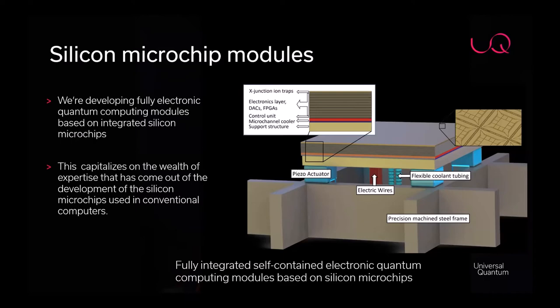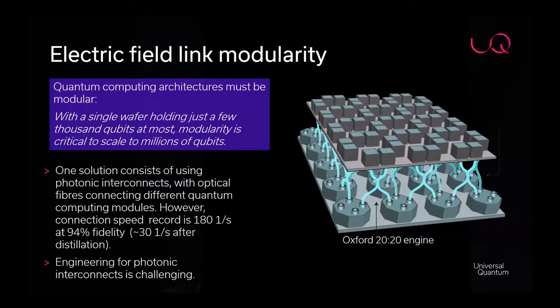The next pillar is modularity. Quantum computing architectures must be modular because however many qubits fit on one wafer, you'll eventually want more. In trapped ions there are two modular architectures. One is the photonic interconnect architecture — used in the Oxford 2020 engine — where optical fibers connect modules by entangling ions via photon detection. However, even after 15 years of development, the world record is only 180 entanglements per second at 94% fidelity, reducing to a few tens per second after distillation — very slow, and the engineering is extremely complicated.